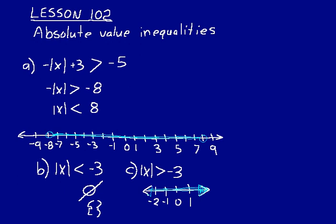So the absolute value of x greater than a negative number, that means any number. Any number, its absolute value will be greater than negative 3.